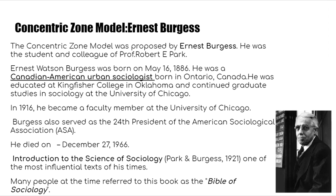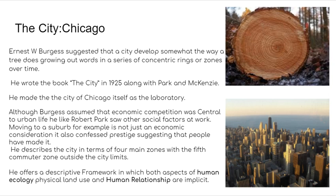One of his most famous books, written in 1921 along with Robert E. Park, is 'Introduction to the Science of Sociology,' considered one of the most influential texts of its time — even called the bible of sociology. Another famous contribution, co-authored with Robert Park and Mackenzie, was 'The City,' published in 1925.